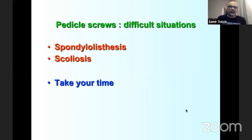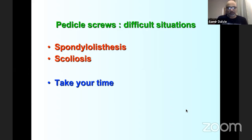Difficult situations include high-grade and dysplastic spondylolisthesis. In these cases, Dr. Dalvi performs decompression first, identifies the exiting root, palpates the pedicle from inside, and places the screw very slowly. There is only one chance — if the L5S1 pedicle is blown in a dysplastic case, the operation cannot proceed to reduction. Scoliosis cases will be covered more by Dr. Amit Sharma.